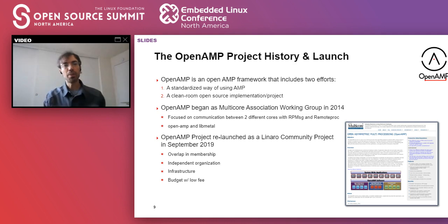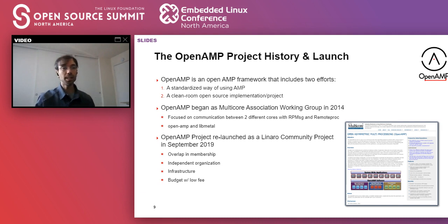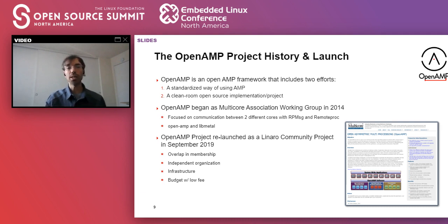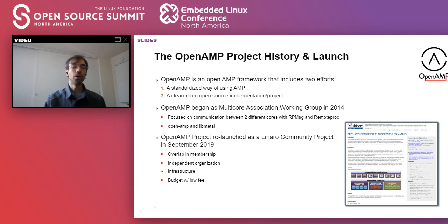OpenAMP, as Natalie mentioned, started small like all open source projects. It started with a couple of repositories on GitHub — the RPMsg and RemoteProc repositories — for a community to solve the very core problems that OpenAMP is trying to solve. RPMsg is a protocol based on VirtIO for communication between clusters, and RemoteProc is for lifecycle management so that one cluster can start the other. But OpenAMP is not just an open source project — the key is really solving the interaction between different components and creating standards through collaboration. Since the beginning, OpenAMP had regular meetings with a few silicon vendors and other companies working together.